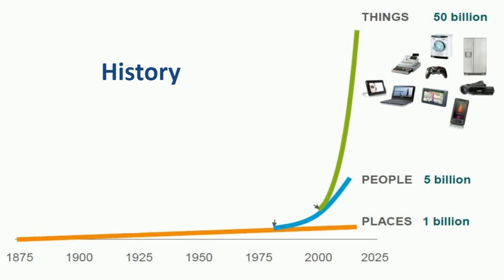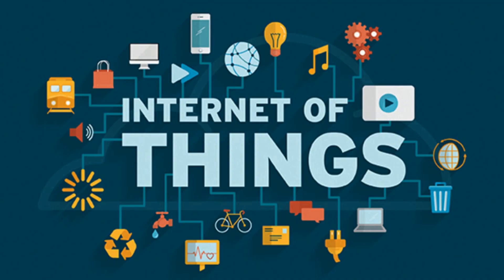That is represented here in the orange line. Later, we had enough resources and technology in place to serve each individual with a mobile — that is the blue line. And the green line here represents things communicating to each other over the internet, and this is called Internet of Things.